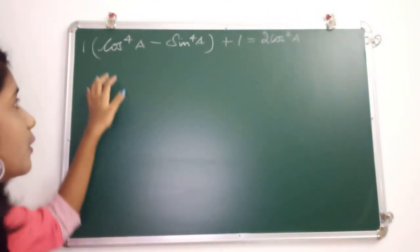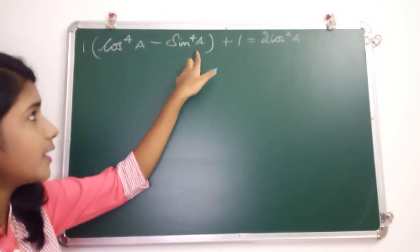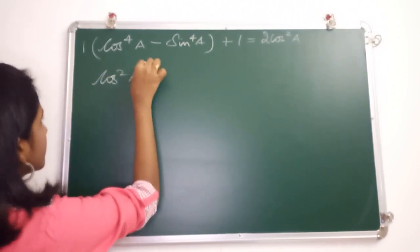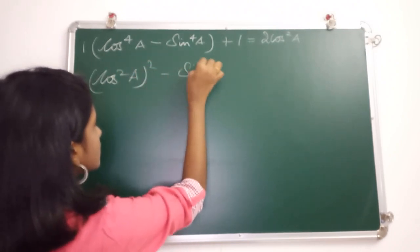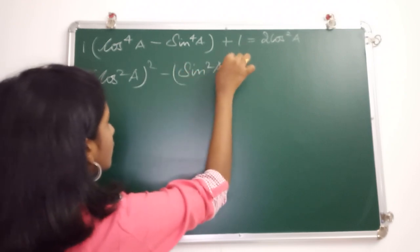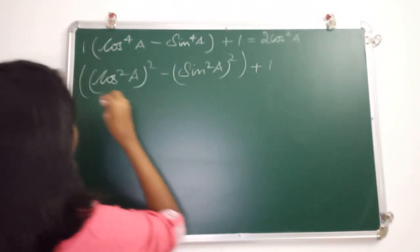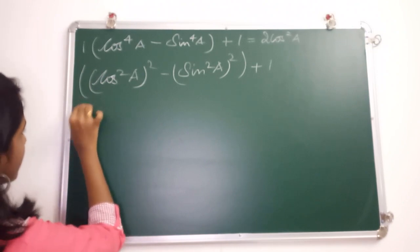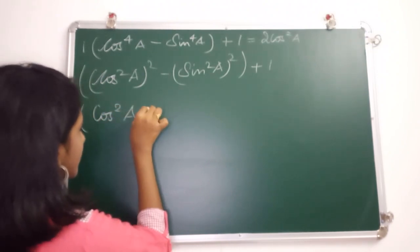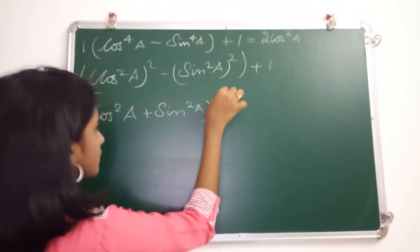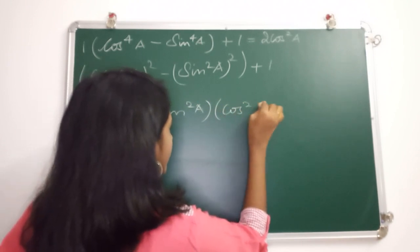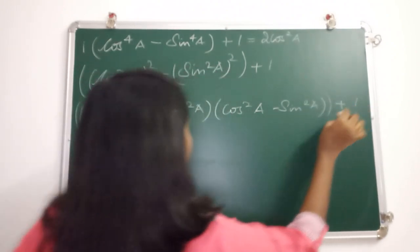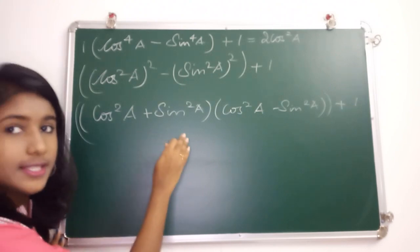First, let's look at the bracket. cos⁴A can be written as (cos²A minus sin²A) the whole square plus 1. This is in the form of a² minus b², so we can write it as (a + b)(a - b), giving us (cos²A + sin²A) into (cos²A minus sin²A) plus 1.